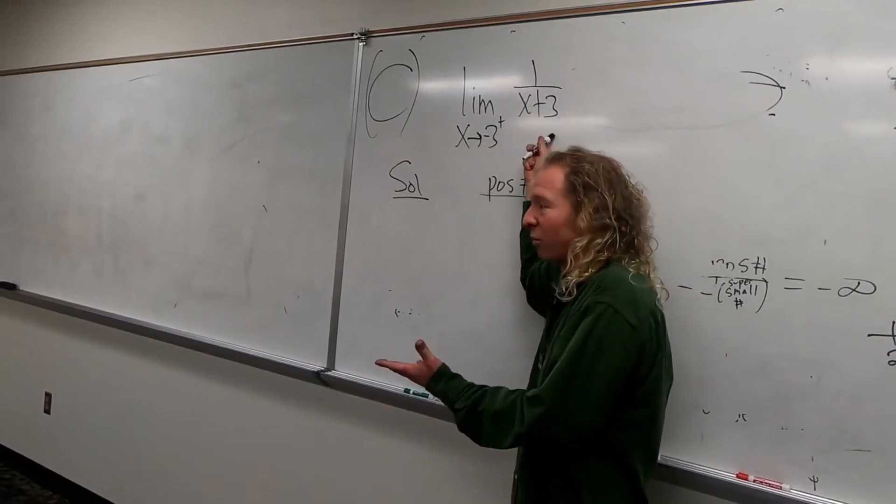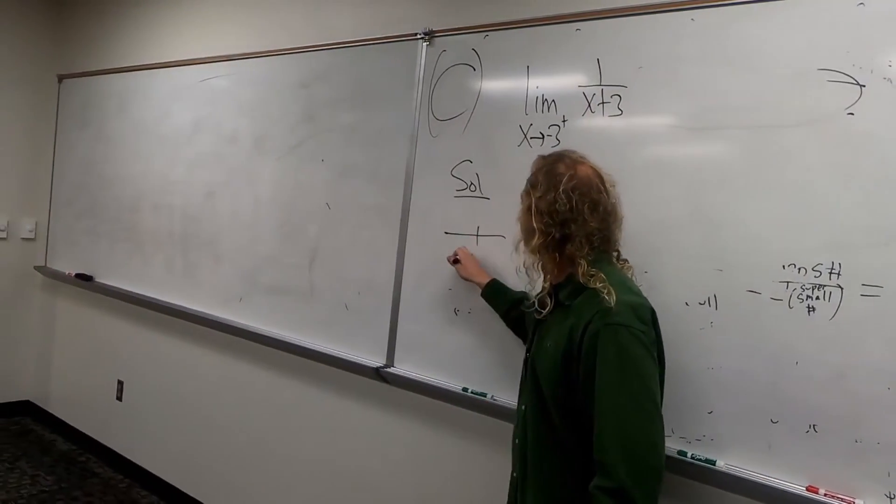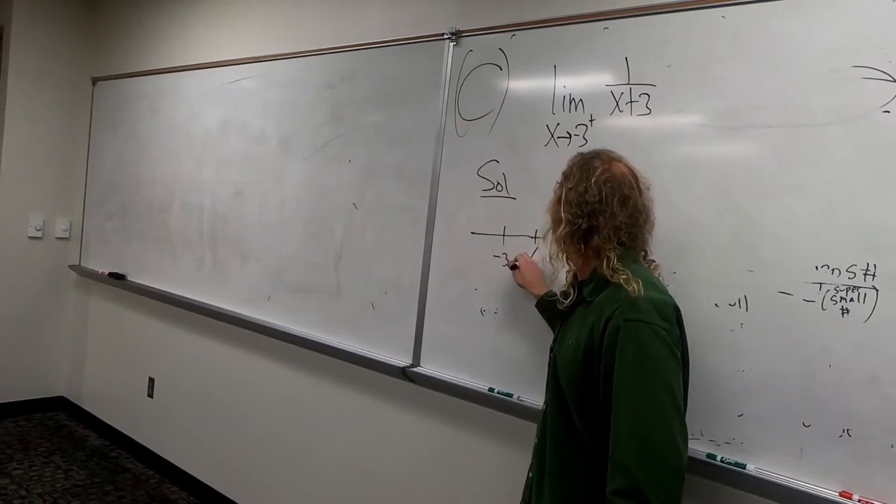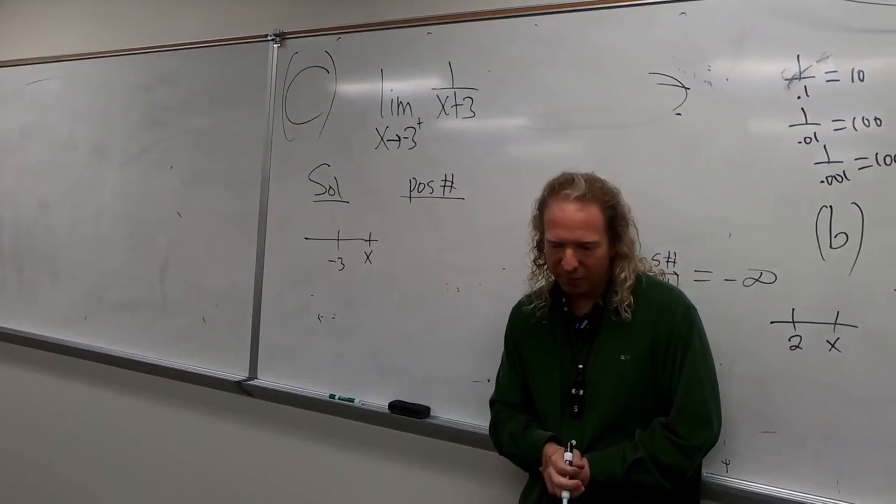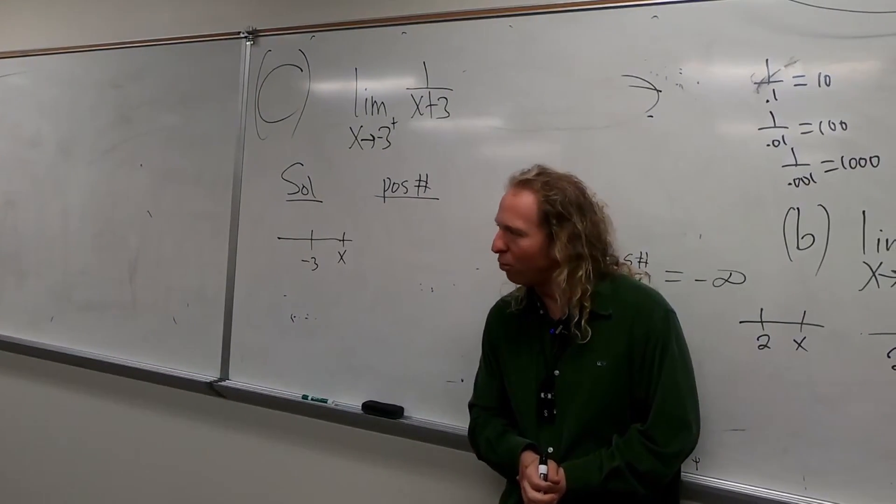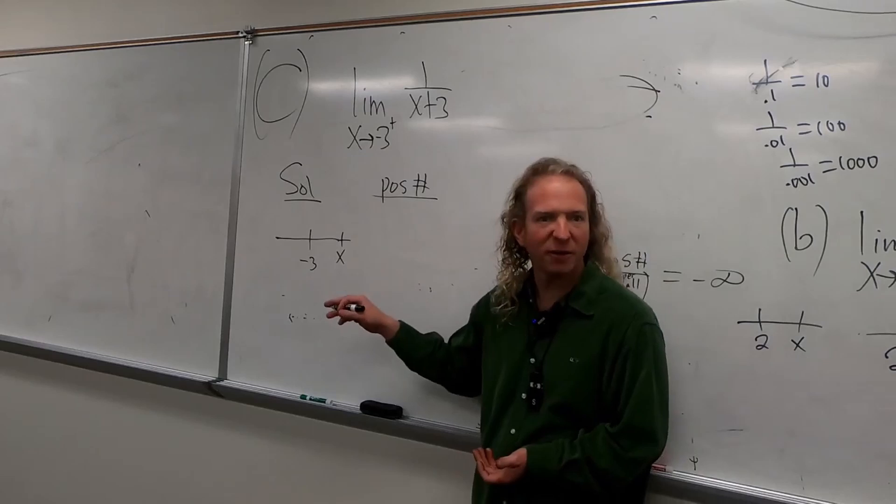So it's a positive number up top because it's 1, right? And then so here's negative 3. We're approaching from the right, so let's see. Bigger than negative 3, so... Negative 2.9. Negative 2.9? Yeah, so negative 2.9, right? That'll work.